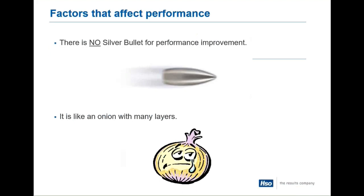A couple of things before we get started into the assumptions — the factors that affect performance. There's no silver bullet for improving performance. You have to kind of look at it, and I have an onion on the screen. It's many layers. So as we start to peel back the onion, each layer is a different problem, or a different solution, or different things that we need to look at. Today we're going to go over the different layers that you might be dealing with.